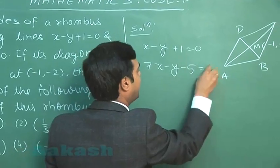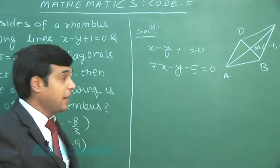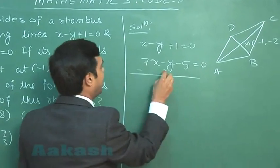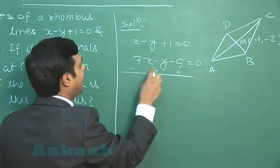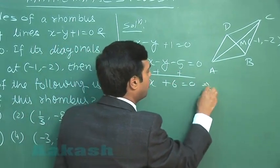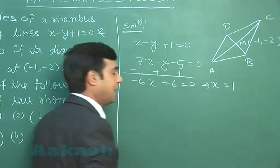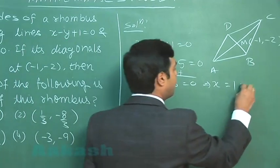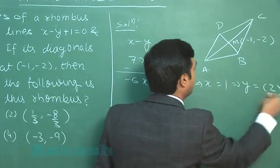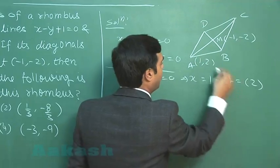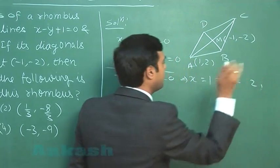Solving these two equations, simply we can write -6x plus 6 equals 0, or x comes 1. Substitute this value of x here to get the value for y as 2. So the coordinate for point A is (1, 2). We can write it. This is clear.